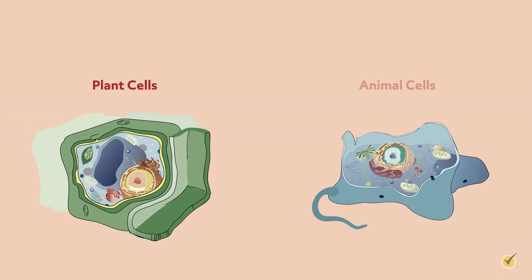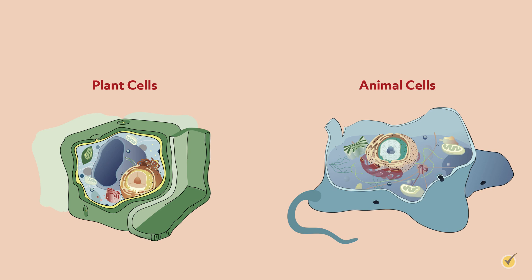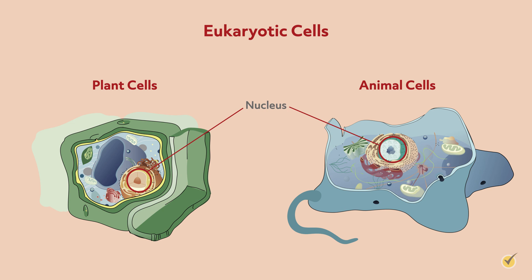Both plant and animal cells are what we call eukaryotic cells. All eukaryotic cells have a membrane-bound nucleus and lots of membrane-bound organelles, which are smaller components of the cell that have specific jobs like keeping the cell alive and functioning.